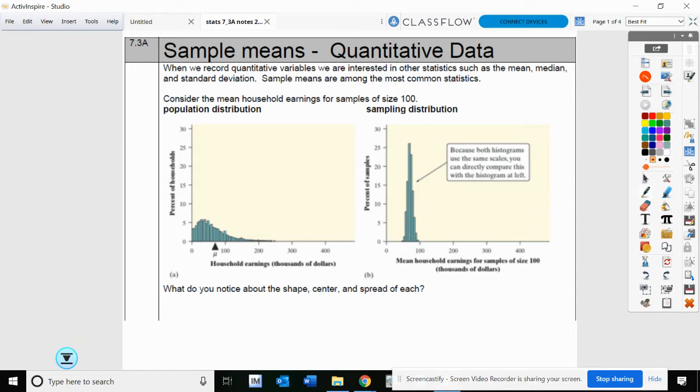When we record quantitative variables, we're usually interested in statistics like mean, median, and standard deviation. Sample means are among the most common statistics. We're going to look at household earnings, average household earnings, with a sample size of 100.